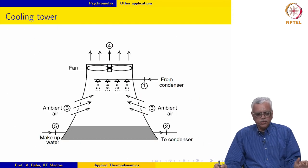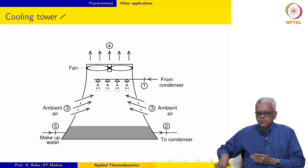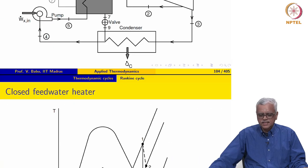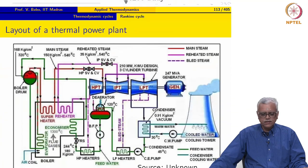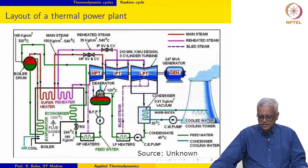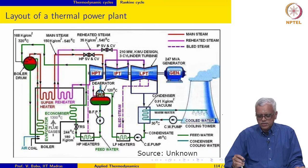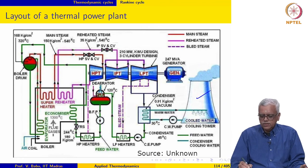The next application we are going to look at is that of a cooling tower, which was briefly mentioned when we discussed the Rankine cycle. In the Rankine cycle, we had looked at all the components except the cooling tower. The cooling tower is used with the condenser to cool the water that comes from the turbine.